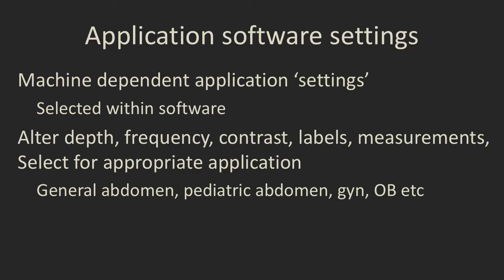Each ultrasound vendor has specific machine-dependent application settings. These are settings that you call up within the software itself — they'll say something like renal ultrasound, pelvic ultrasound, or musculoskeletal ultrasound. They affect the depth of the penetration beam, the frequency, the contrast, what labels will be available, and what type of measurements will be available for that specific application. These are the so-called optimal settings, but you can also alter them once you've called up that software.